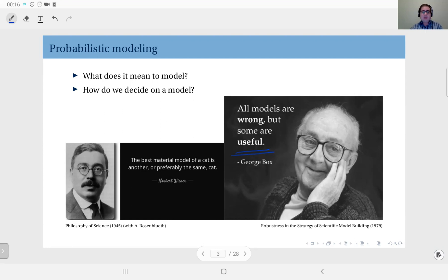And another good example is given by again a famous probabilistic researcher Norbert Wiener. He says in his book Philosophy of Science authored with Rosenblut, the best material model of a cat is another or preferably the same cat.